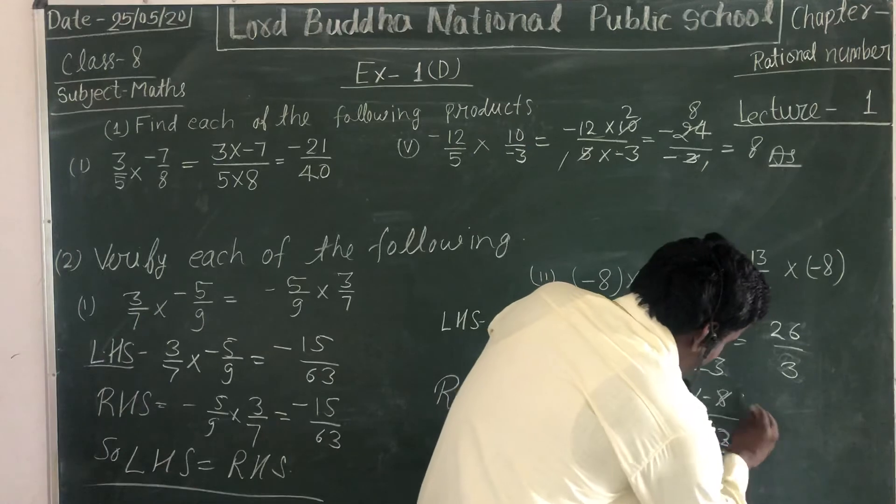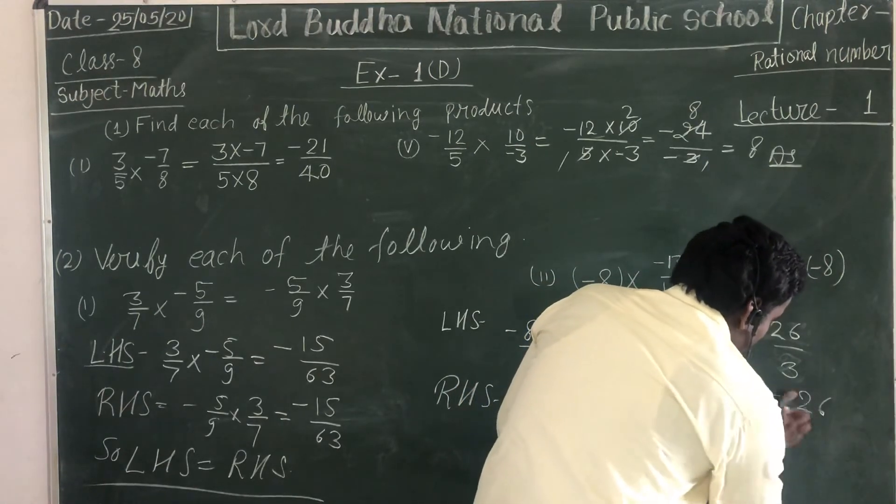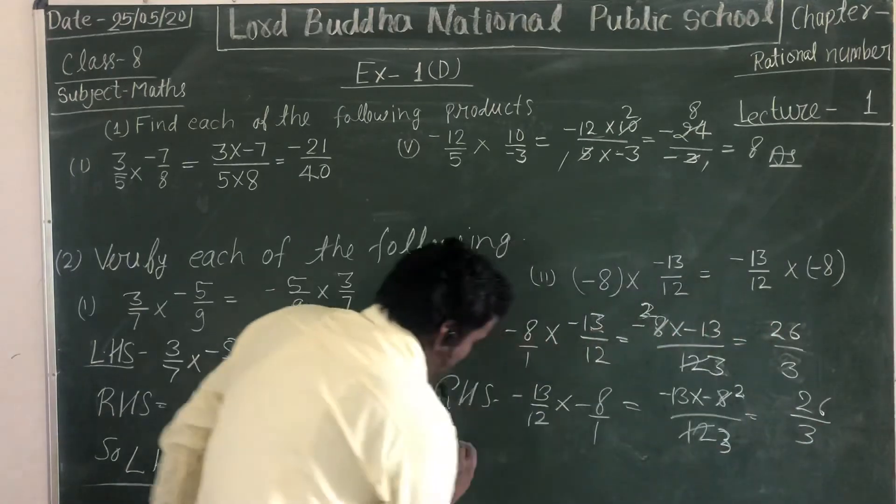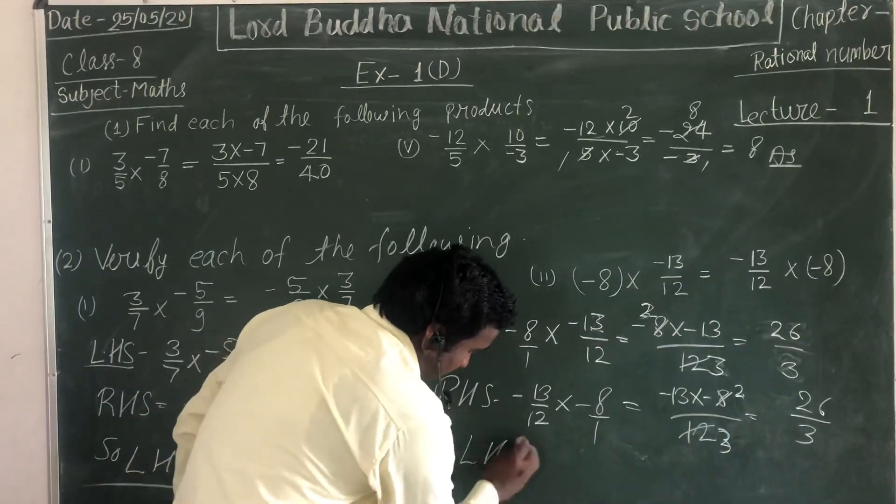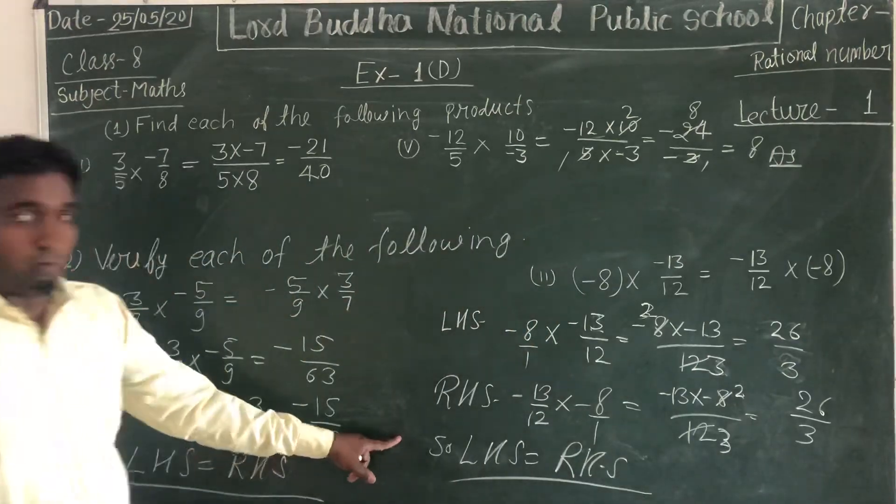So 2 times 13 equals 26 upon 3. The answer is 26/3. Left hand side equals right hand side. This is the proof.